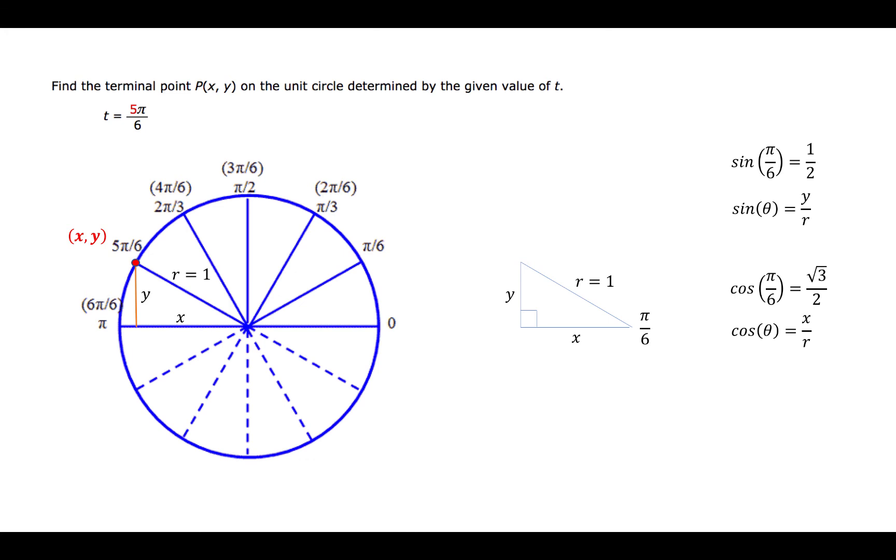So let's take this first relationship, sine of π over 6 equal to 1 half and sine of θ equal to y over r, and set them equal to each other. So we have y over 1 equal to 1 half, which tells us that y is equal to 1 half.